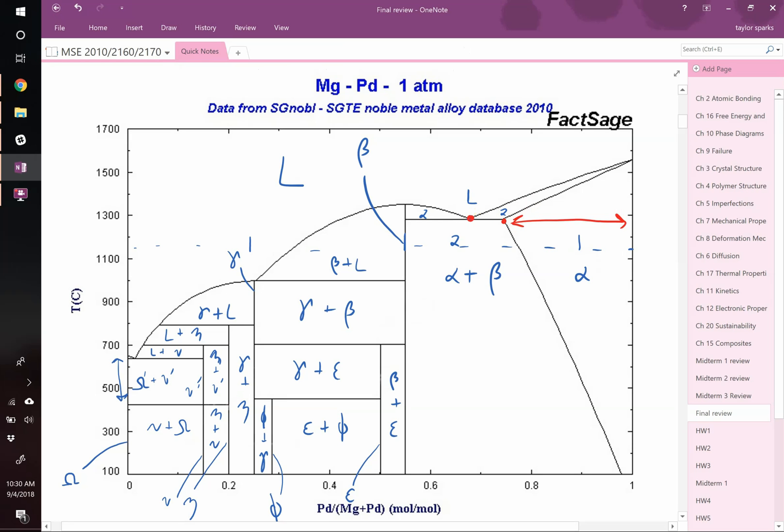We have peritectic reactions right here, and right here. What else do we have? We have two solids going to one solid. What do we call that? So that would be a solid plus all that would be a paratectoid reaction happening right here. There's a paratectoid.